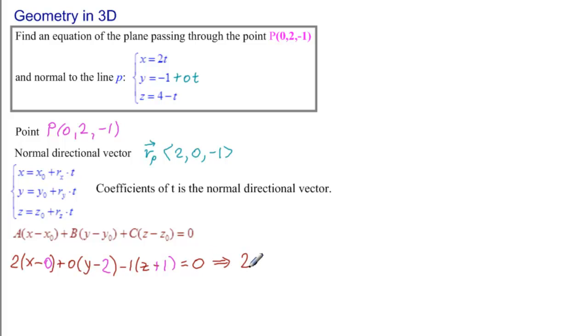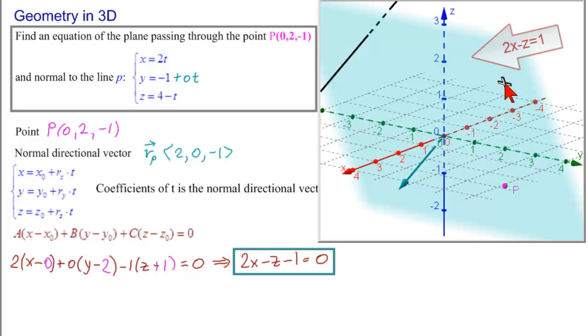Which is 2x minus z minus 1 equals 0. So there is an equation of the plane passing through that point and normal to that line.